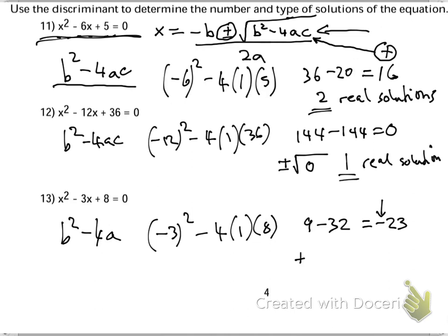This will give me negative 23, but it doesn't really matter because it is negative. If I try to square root a negative number, I will get 2 complex solutions - the imaginary ones with i. That's just using the discriminant to determine the number and type of solutions of the equation.